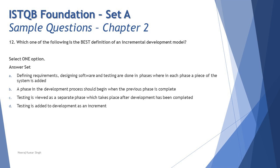Always read all options even if the first seems correct. Option B: a phase in which the development process should begin when the previous phase is completed — this describes a sequential model like waterfall or V-model, where phases cannot overlap. Option C: testing is viewed as a separate phase which takes place after development has been completed — again referring to sequential models like waterfall and V.